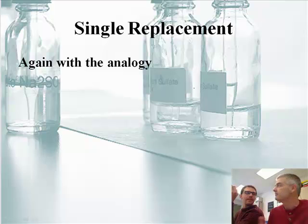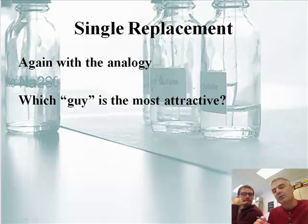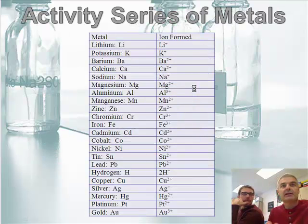If he's already got the girl, he keeps the girl. So what we mean in chemistry terms by the best looking guy is the metal that is highest on the reaction table. Which guy is most attractive? Now, if you remember at the beginning of this entire unit, we said you need to tape a couple of tables in the back of your comp book. Please get your comp book out now. Open up to that table. The table looks like this.